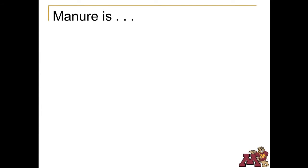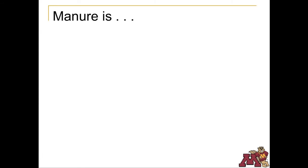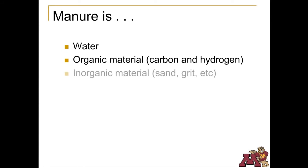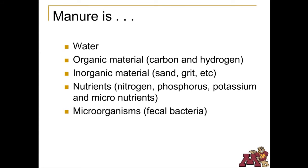Manure can mean different things to different people. This presentation defines manure as the excretion of urine and feces from the animal, including any bedding or feed that comes along with the animal's biological waste. With liquid manure systems, wastewater and wash water also enter into the manure storage unit. Manure is generally a mixture of water, organic matter, inorganic matter like sand and salt, and nutrients like nitrogen and phosphorus. There are also microorganisms that feed off the organic matter called fecal bacteria that come from the gut of the animal.